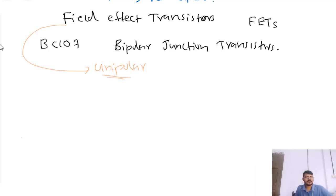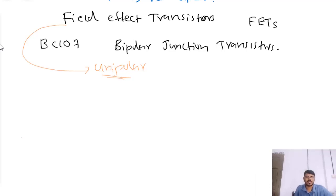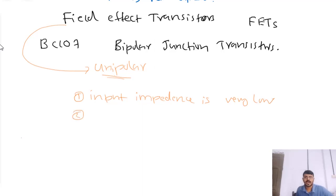If you consider an ordinary transistor, then it is having mainly two disadvantages. The first one is the input impedance of an ordinary transistor is very low. And the second one is the high noise level. The noise is very high in case of a BJT.